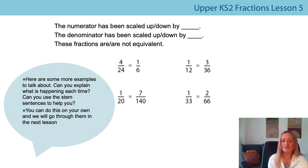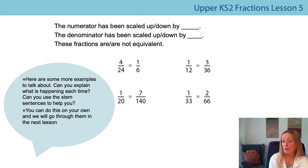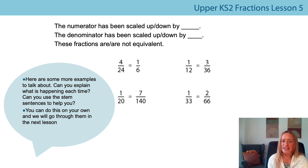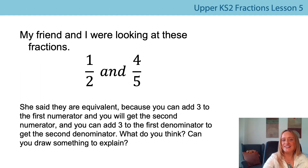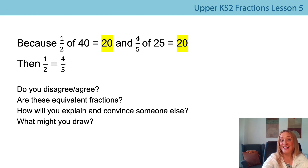So this is your independent task now. We're drawing on everything we looked at yesterday and thinking about those multiplicative relationships and how we can prove if fractions are equivalent or not — not only by pictorially representing them, but by looking mathematically at those multiplicative relationships. Use the stem sentences and explain what is happening each time. Draw the arrows on and think about those relationships. Your second task involves some problems to solve looking at equivalent fractions, and if you're ready for a challenge, look at those statements and say whether you agree or disagree. Good luck with your independent work and I look forward to seeing you again.